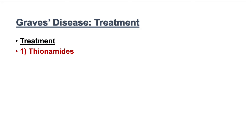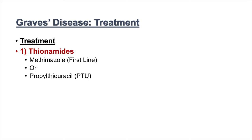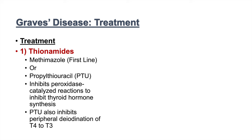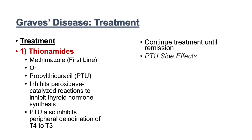Treatment of Graves' disease is with thionamides. Methimazole is the first-line treatment; the alternative is propylthiouracil, PTU. Both inhibit peroxidase-catalyzed reactions to inhibit thyroid hormone synthesis, and PTU also inhibits peripheral deiodination of T4 to T3. Patients continue treatment until remission. PTU has concerning side effects including hepatitis and agranulocytosis, as well as fever and rash, which is why methimazole is preferred and PTU is reserved for specific circumstances.